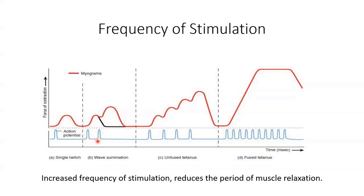If we then have two action potentials one after another, the level of force summates and we get a slightly stronger contraction. This is because the muscle doesn't fully relax, and not all of the calcium will leave the sarcoplasm before the next action potential starts, so more cross bridges can be formed. We then have what we call unfused tetanus — also called incomplete tetanus — where the muscle fibres do not completely relax before the next action potential, but there is partial relaxation between twitches. The force produced by each consecutive action potential continues to summate and increase.